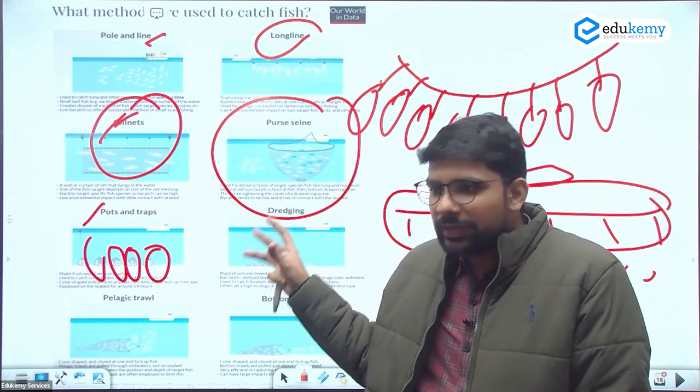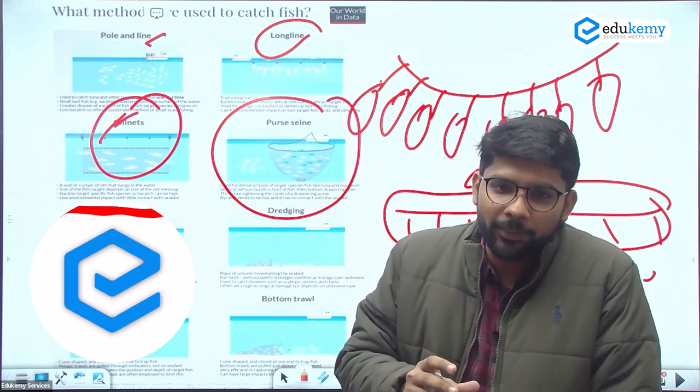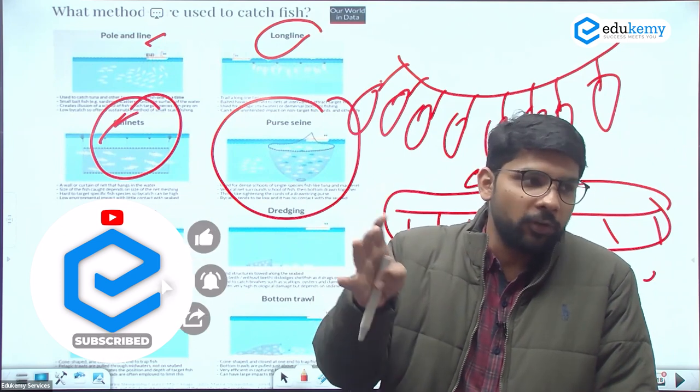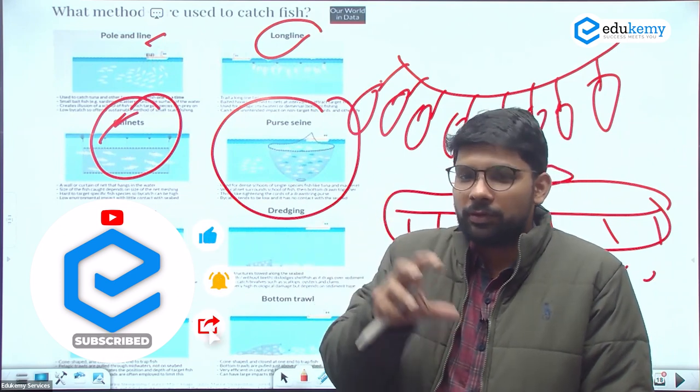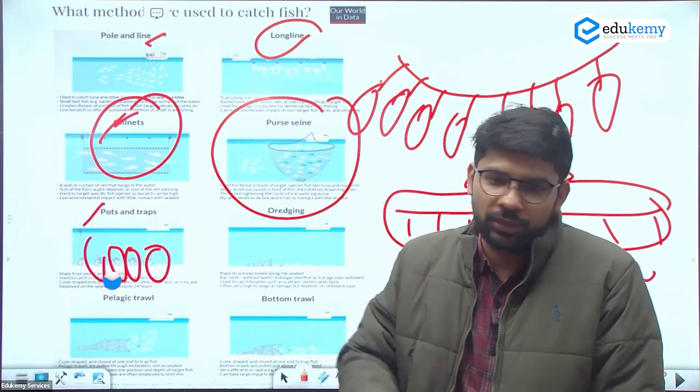They can ask you to match the following pairs or consider the following pairs. You need to know all four options: only one pair correct, only two pairs correct, only three pairs correct. They're changing the type of options.